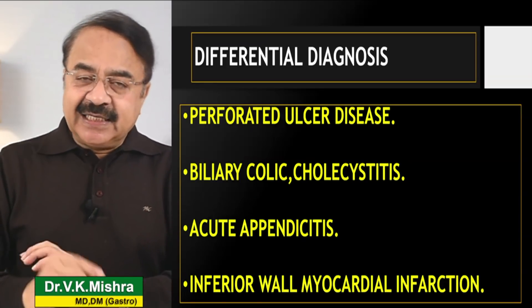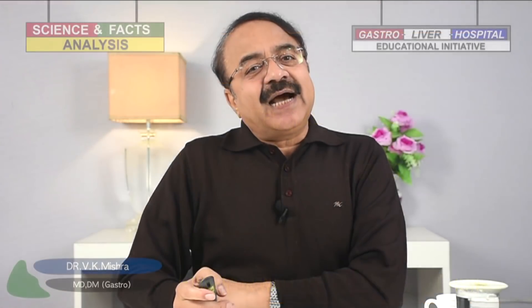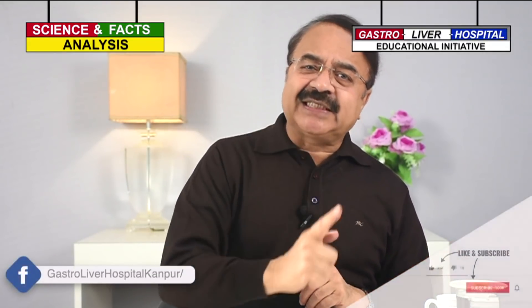वो कौन सी दूसरी चीज़ें हैं जो confuse करती हैं? Number one — अगर आपको perforated ulcer disease है, ulcer की बीमारी थी और ulcer burst हो गया, तो उसमें उतना ही तेज़ दर्द आएगा जितना acute pancreatitis में आता है. उसमें बहुत सारे characteristics वैसे ही आएंगे जैसे acute pancreatitis में.